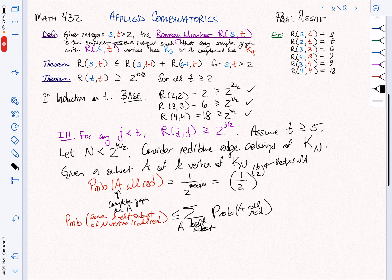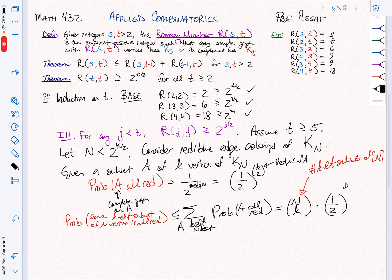This is at most the sum overall A, that's a K element subset of the probability that A is all red. How many K element subsets are there? Well, that's just N choose K. This is the number of K element subsets of N. And then what's the probability for each one? We're going to have one half to the K choose 2, because that's what we computed before.